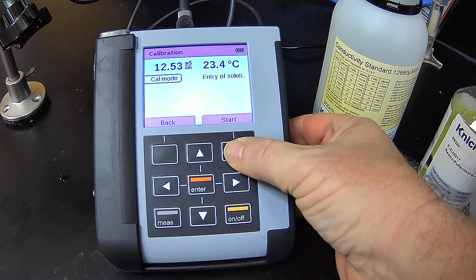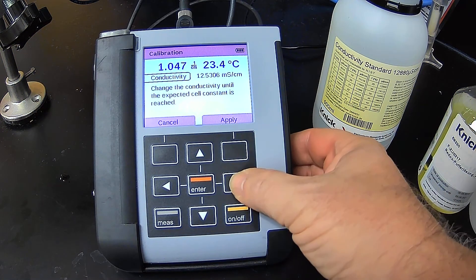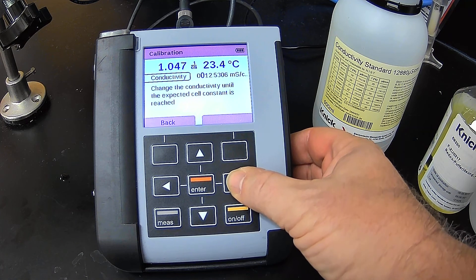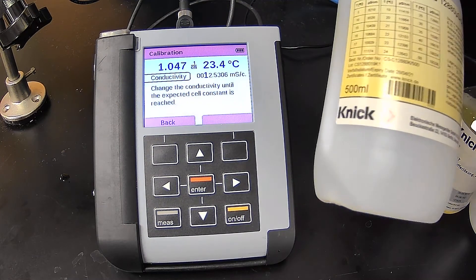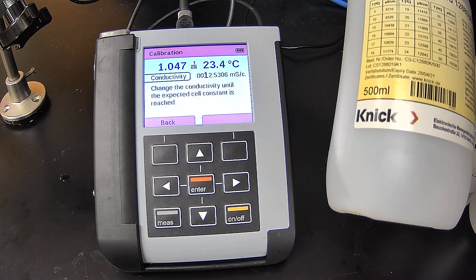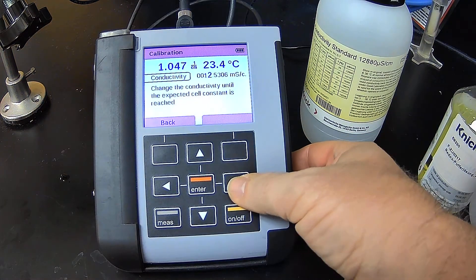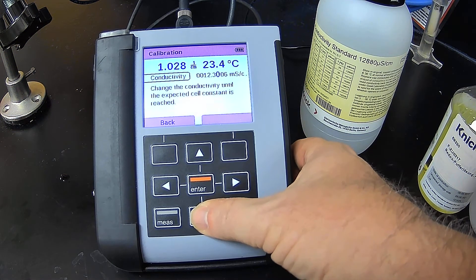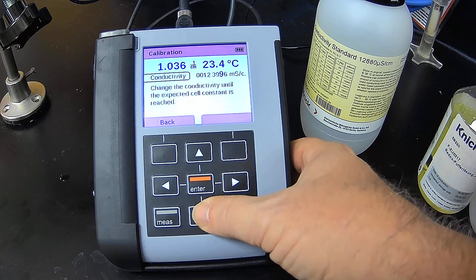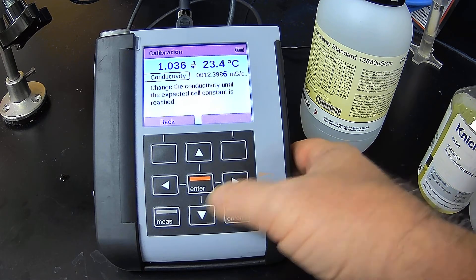And then it asks us for the conductivity solution value. As I said, at 23 degrees Celsius, we're at 12,398. So we're going to put in 12,398.